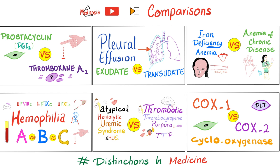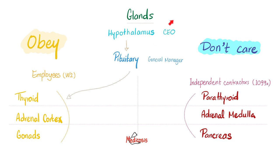This is my comparisons playlist — I have tons of these. My favorite video in this playlist is called Insulin World vs. Glucagon World. You have the CEO followed by the general manager, and then the employees and independent contractors who listen to the manager. Those employees include the thyroid, adrenal cortex, and gonads.